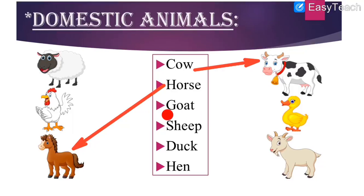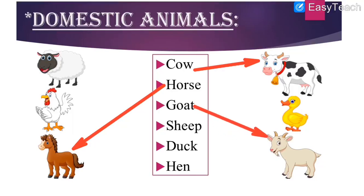Next: G-O-A-T, goat. Where is the goat? Goat is on the right hand side. One, two, three — here is the goat, the last animal standing. Let us match the spelling with the picture of goat.